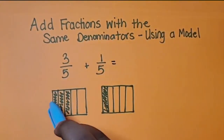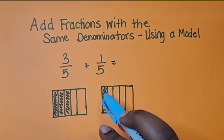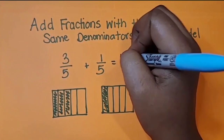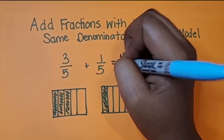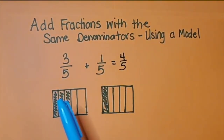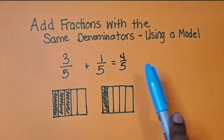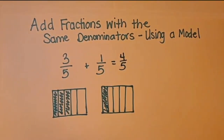Count 1, 2, 3, 4 — 4 fifths. Or: 1 fifth, 2 fifths, 3 fifths plus 1 more fifth equals 4 fifths.